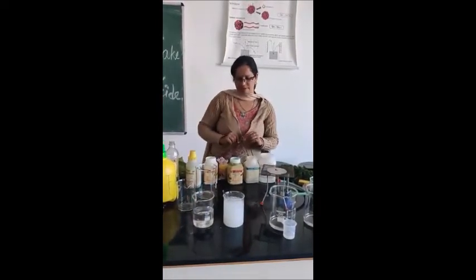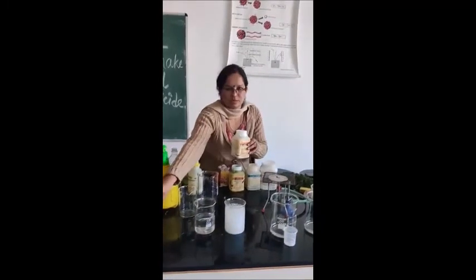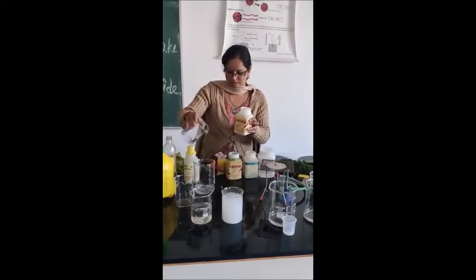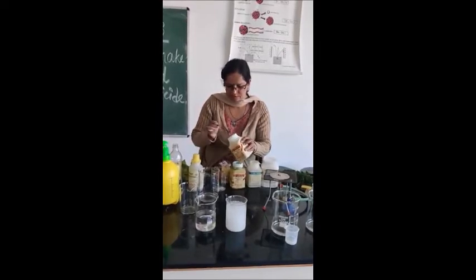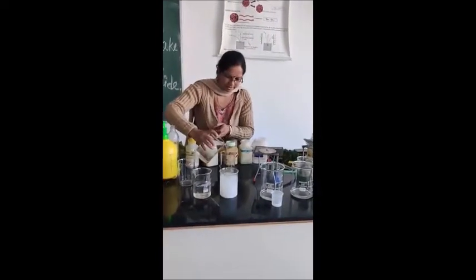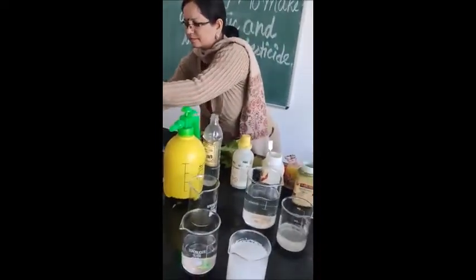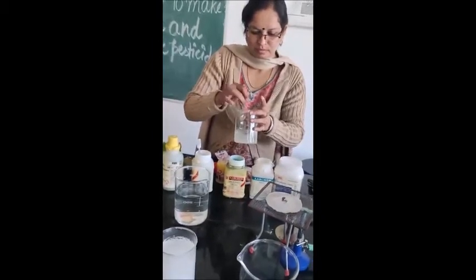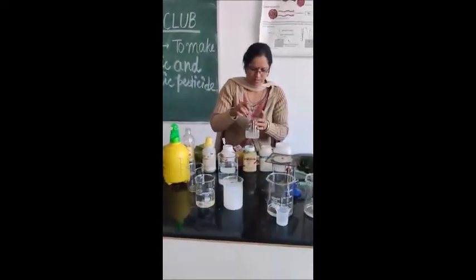The next important thing in our kitchen is common salt — sodium chloride, the common salt. You can also use this common salt as a pesticide by making a dilute solution of it, or you can also sprinkle it. A pinch of this salt is added in a beaker and dissolved in water. You can take warm water for mixing it. After mixing, we will dilute it, and it will be mixed with the help of a glass rod.